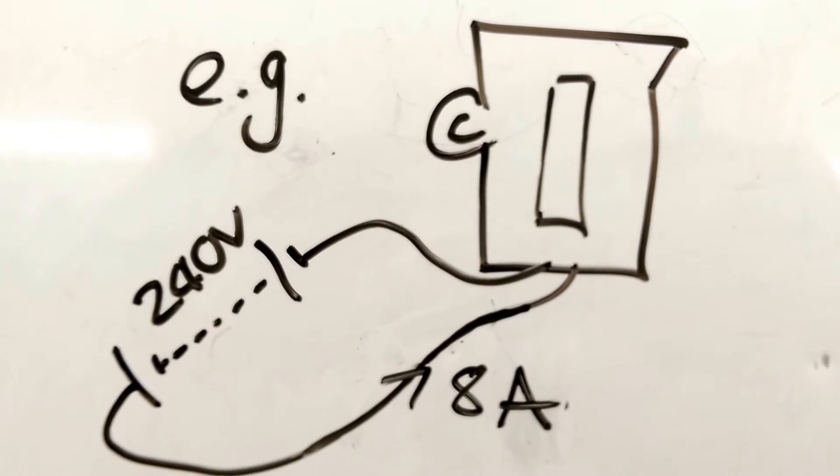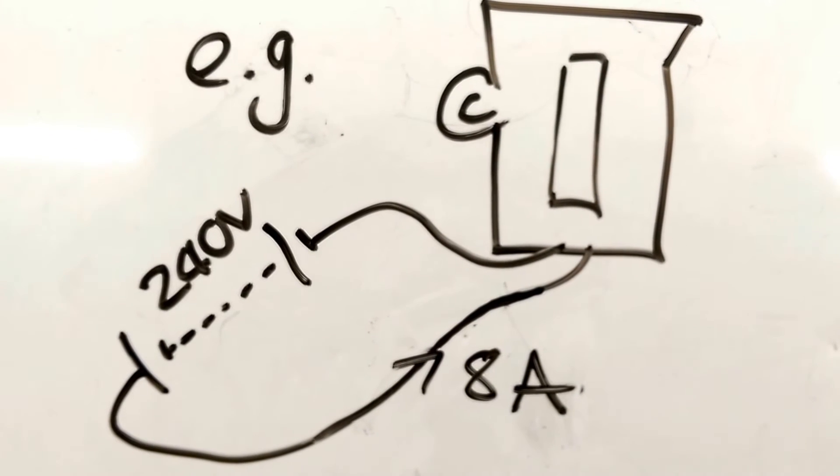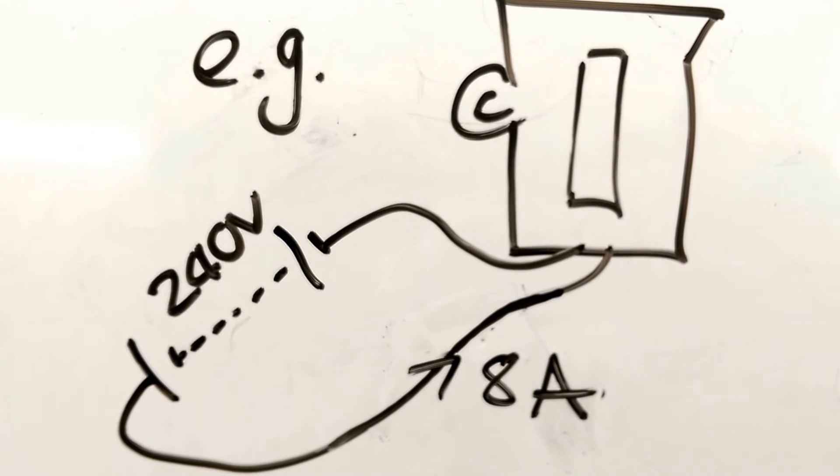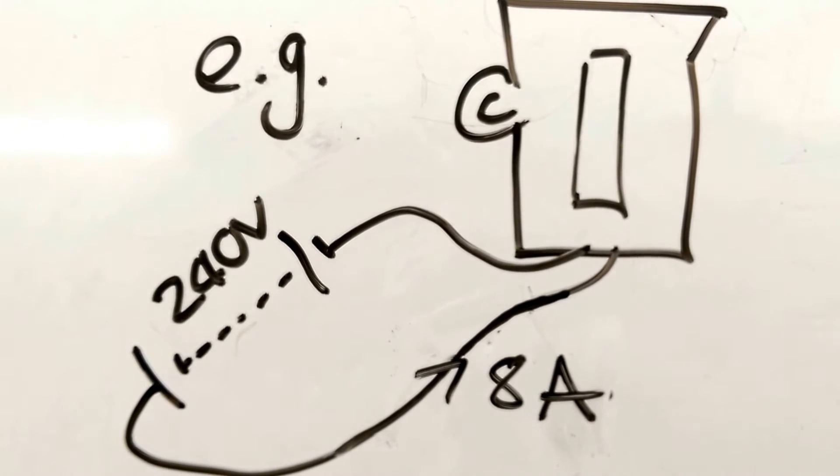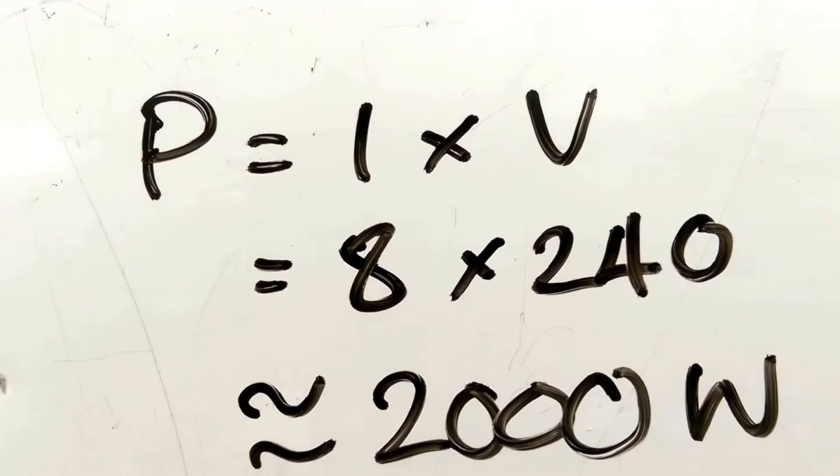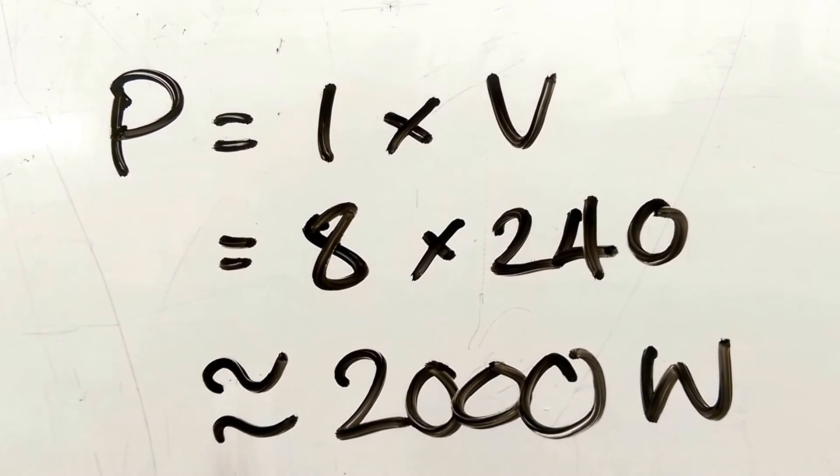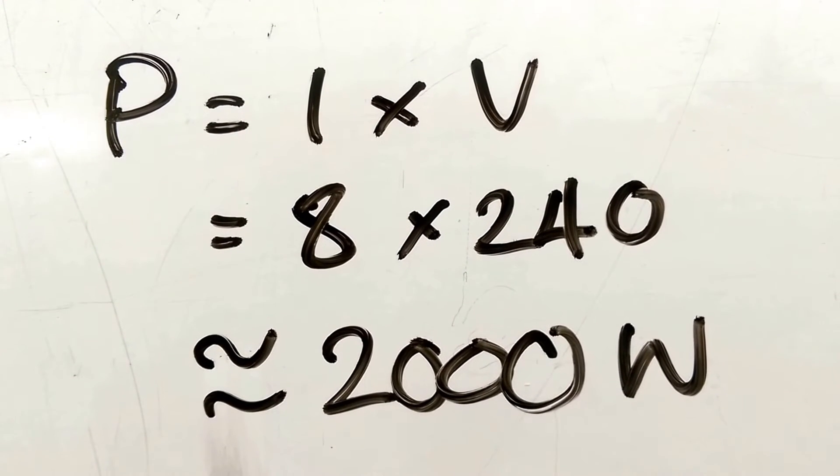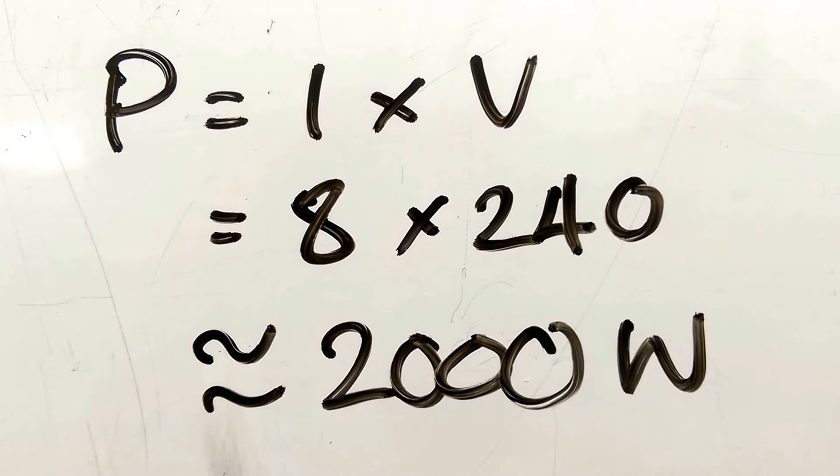Here's a kettle. The kettle is a mains appliance, so the voltage is 240, and we measured the current. It's about 8 amps. So what's the power? Well, power is current times voltage. So it's 8 amps times 240 volts, which is about 2,000 watts.